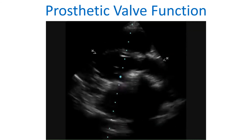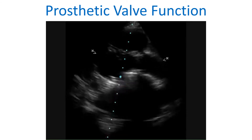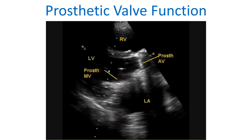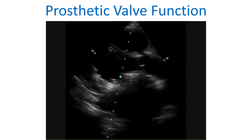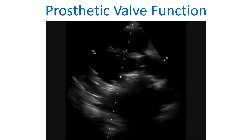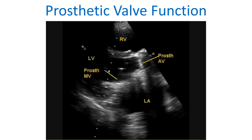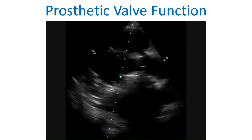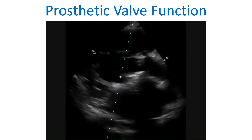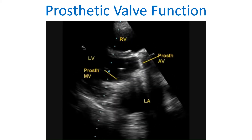In the still image, the aortic valve is in the closed position and the mitral valve in the open position. The open tilting disk of the mitral valve is seen as a thin echo in the lower portion of the left ventricular outflow tract with an echo-dense tip.